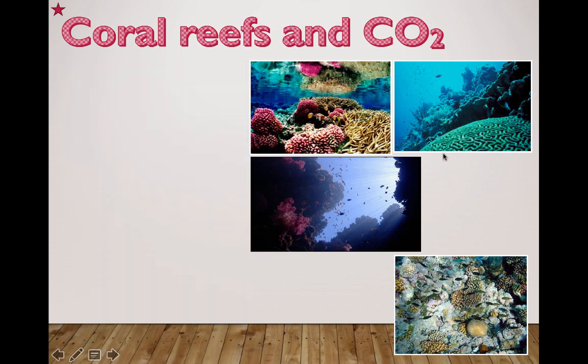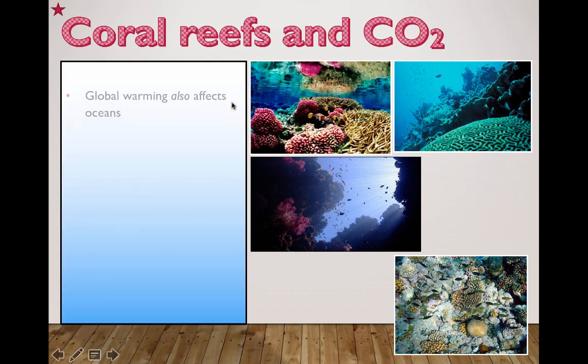Let's take a look at one other kind of impact besides the obvious ones. The obvious ones we've been talking about are increased temperature, ice melting, and raising sea levels — that's kind of a level five understanding. If you want to go a little bit deeper, let's start talking about what actually happens in the ocean when extra carbon dioxide gets absorbed there.